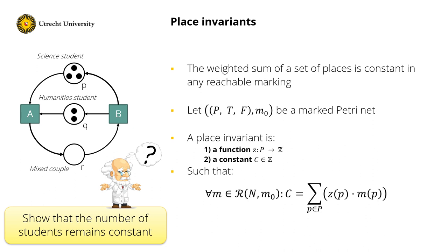Formally, a place invariant is a function Z that maps each place to a weight (an integer), together with some constant integer C. Then the weighted sum of the tokens in each place equals this constant C in all reachable markings.